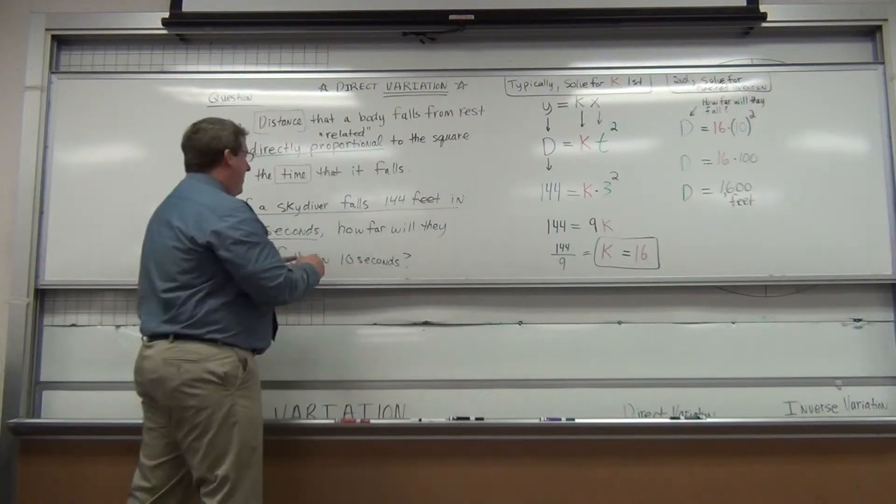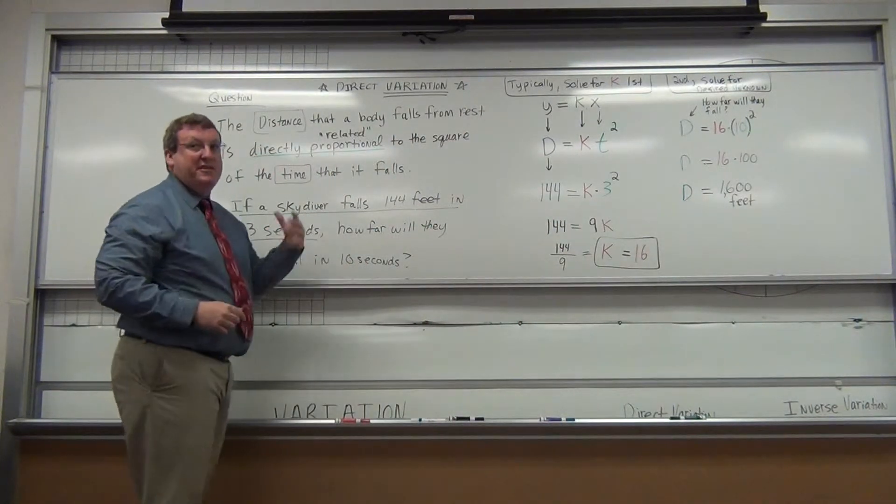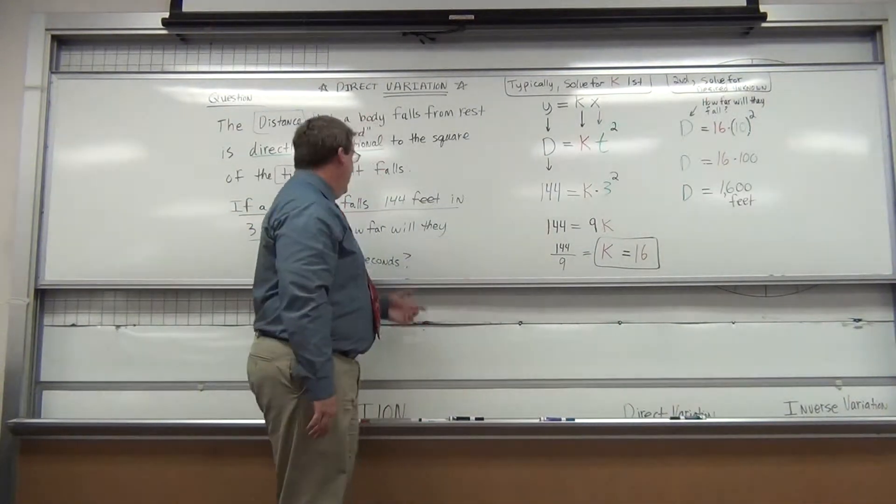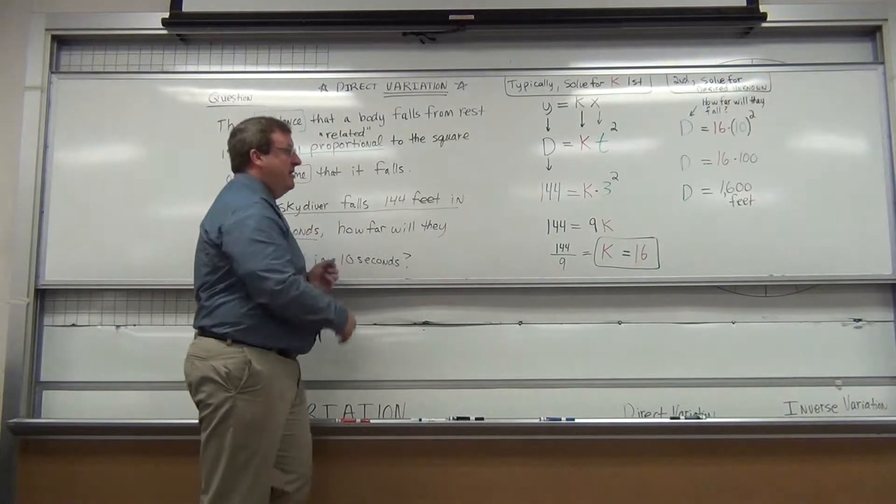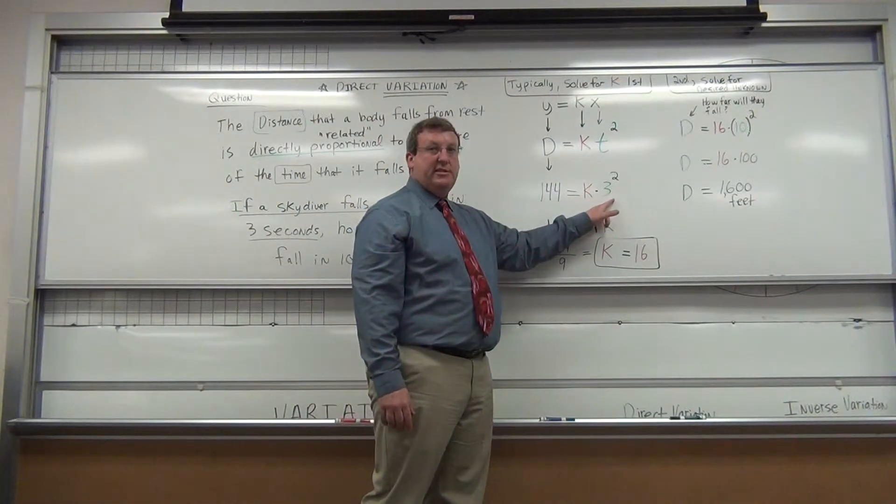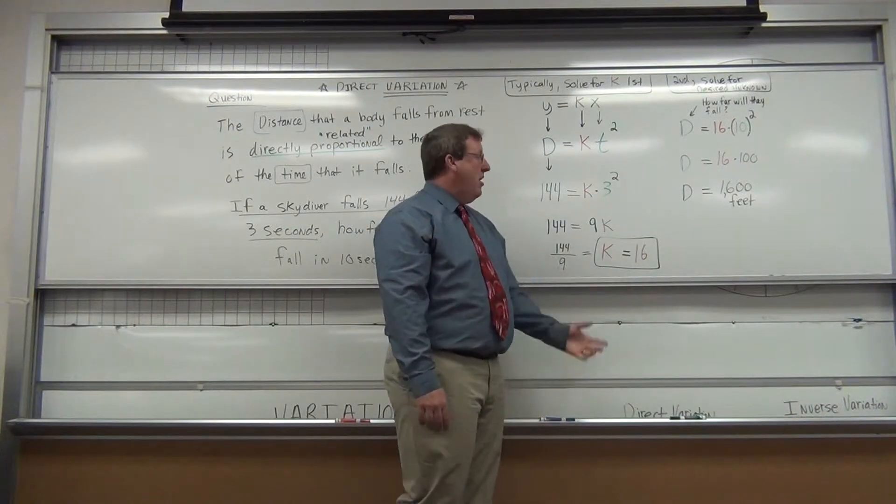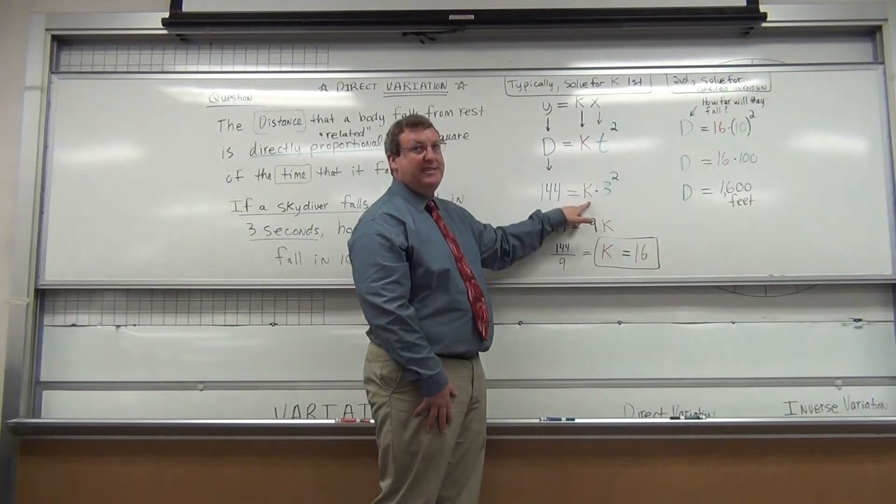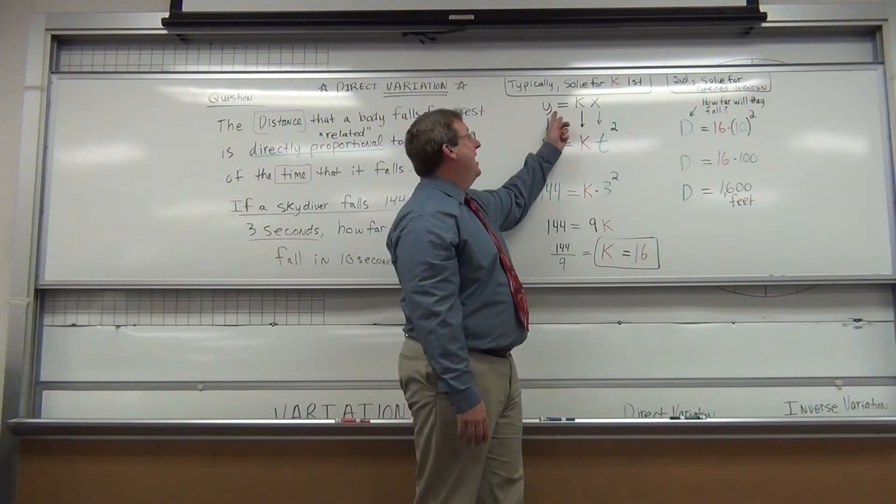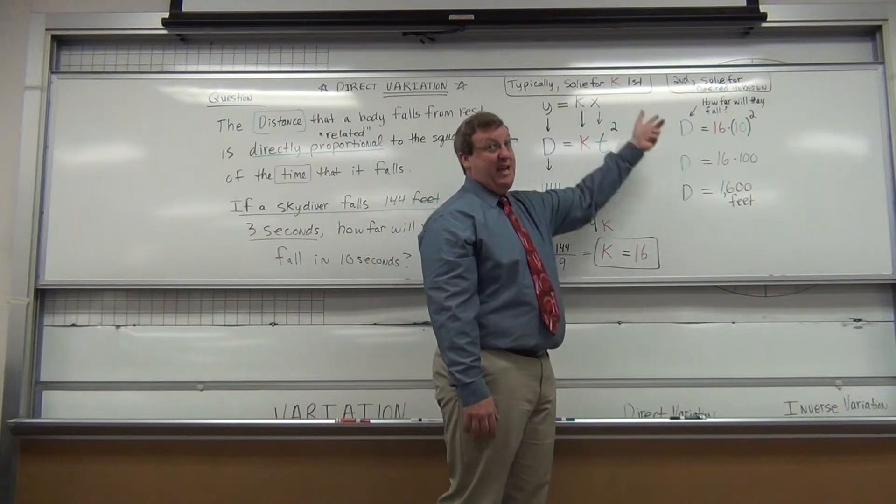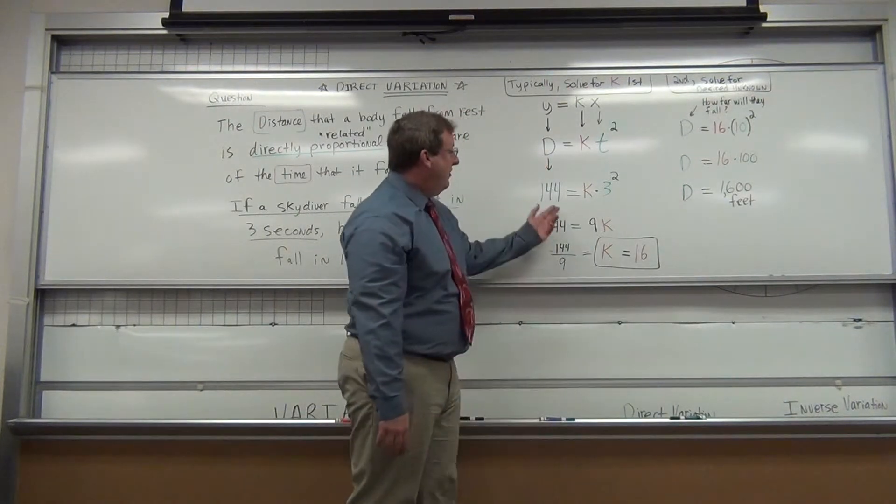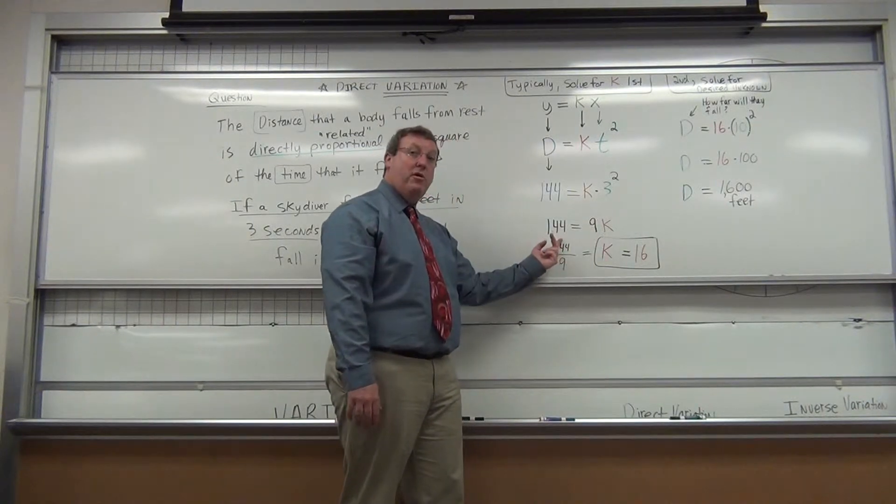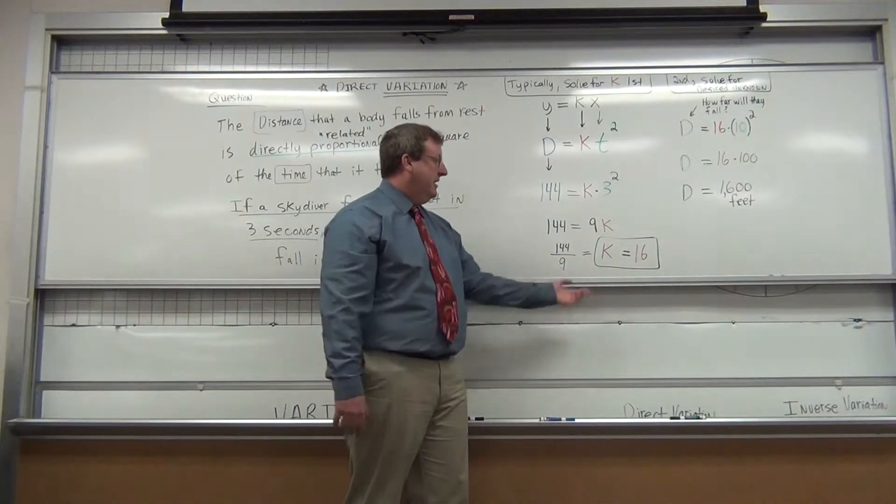Let's see what they give you here. The skydiver falls 144 feet. So that's your distance. Distance is 144 feet, and it happens in three seconds. So 144 equals k times three seconds squared. One equation, one unknown. What's my unknown? The proportionality constant, k. All we have to do is a little simple math. Three squared is 9, so 9k equals 144. Solve it: k equals 16.